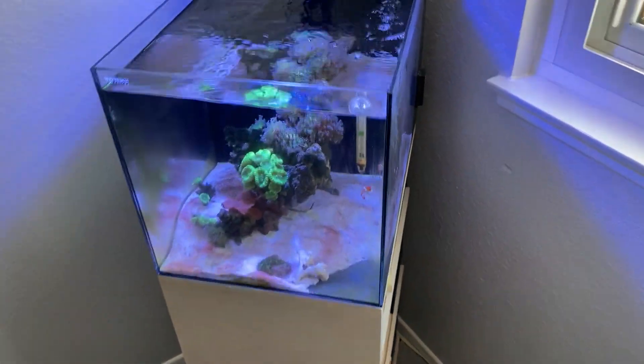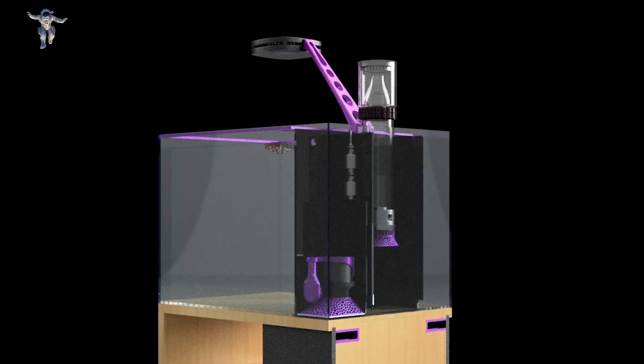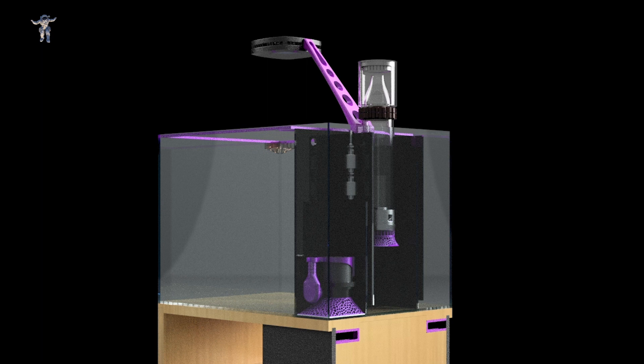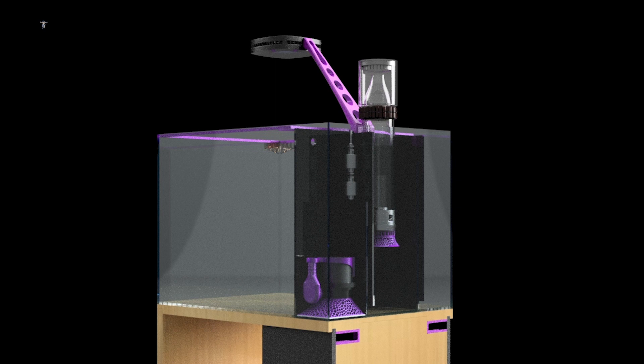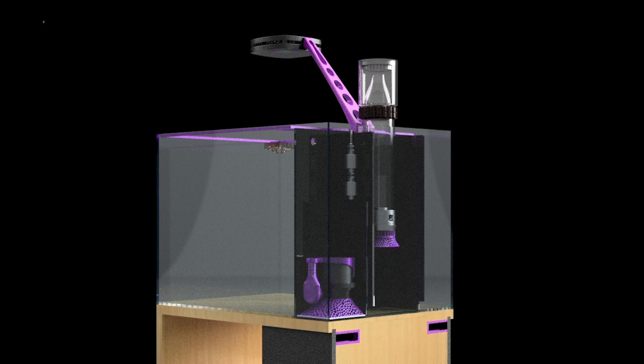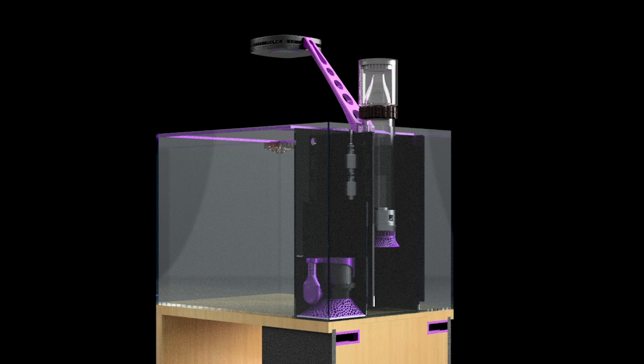So let's talk about the changes I'm going to make today. This is my Waterbox Peninsula Mini CAD model. This is where I've been making the upgrades and some of the 3D printed parts. If you notice, I've got the stand and then they've got the light arm for the AI Prime.